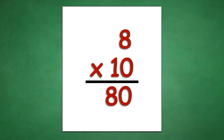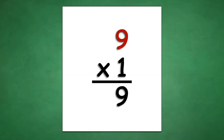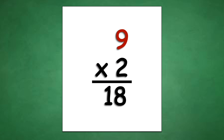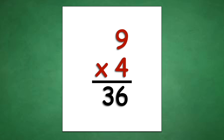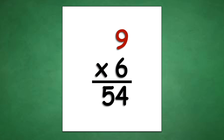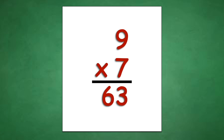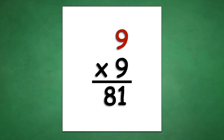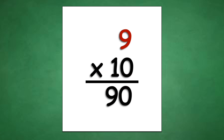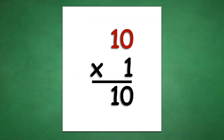Table of 9: 9 times 1 equals 9, 9 times 2 equals 18, 9 times 3 equals 27, 9 times 4 equals 36, 9 times 5 equals 45, 9 times 6 equals 54, 9 times 7 equals 63, 9 times 8 equals 72, 9 times 9 equals 81, 9 times 10 equals 90.